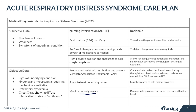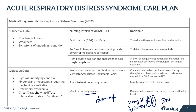Monitor the hemodynamics of your patient. The damage and decreased compliance in the lungs causes pressure to build up, increasing pressure on the major vessels and leading to decreased cardiac output. Additionally, hypoxia can cause ischemia to the heart muscle, ultimately leading to cardiogenic shock.